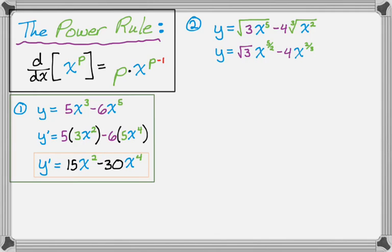So it's going to be y prime is radical 3, and then times, bring the exponent down, so 5 halves, x to the subtract 1 from 5 halves, so that's subtracting 2 halves, so we get 3 halves. And then minus 4, and bring the exponent down, it's 2 thirds, x to the subtract 1, you get negative 1 third, and that'll happen a lot.